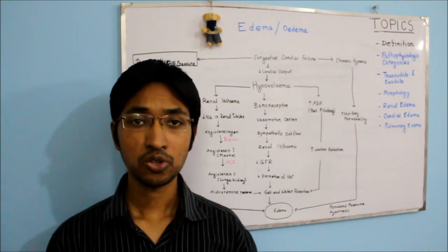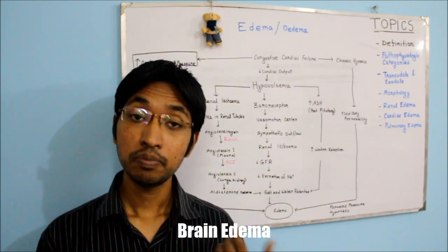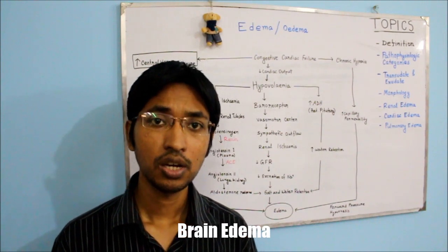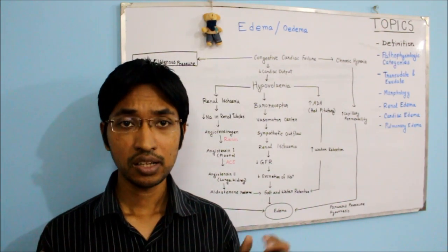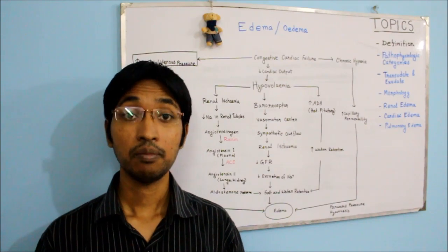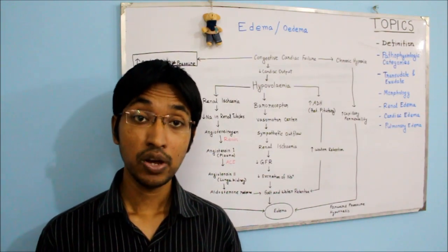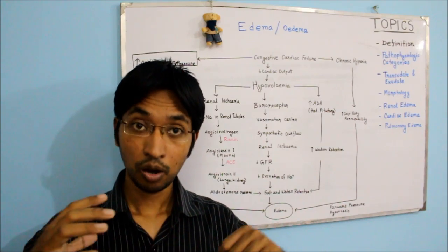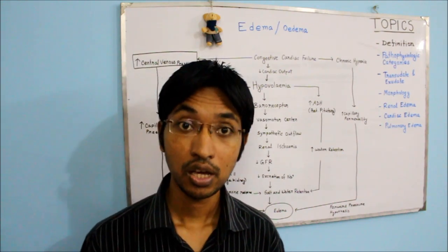Brain edema can be localized or generalized, depending on the type of injury and the nature of the underlying pathology. Whenever there is brain edema, the sulci become narrowed and the gyri become distended against the unyielding skull. This is very dangerous and can be fatal because the swollen brain gets compressed against the skull.